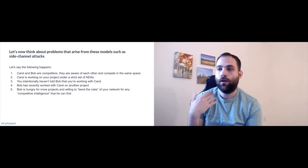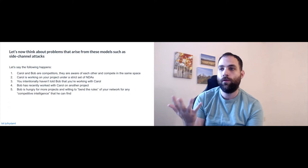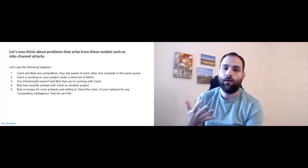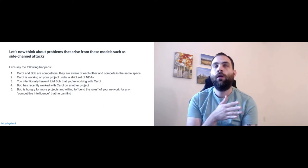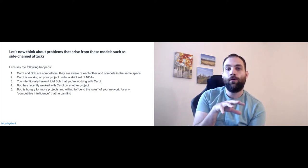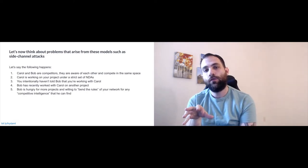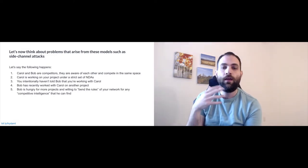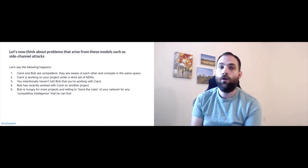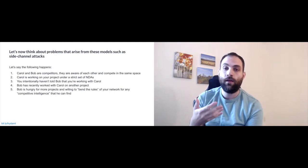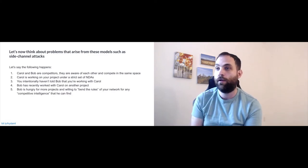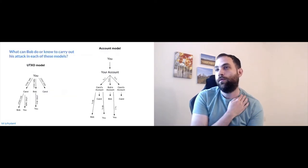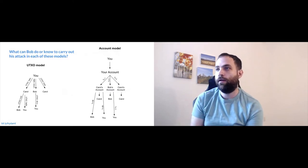We're going to say Carol and Bob are competitors. Carol is working on your project under a strict NDA, so she shouldn't be disclosing information to anyone. You've intentionally not told Bob you're working with Carol because this is a very important project. Bob has also recently worked with Carol on a completely different project that happens to be on the same network — and this is where the side channel comes in.